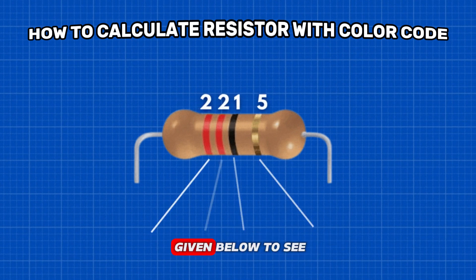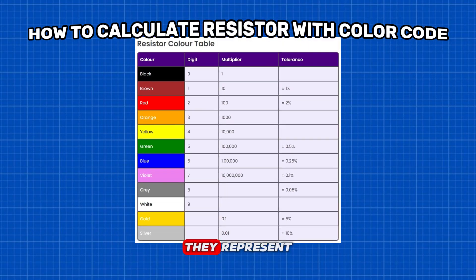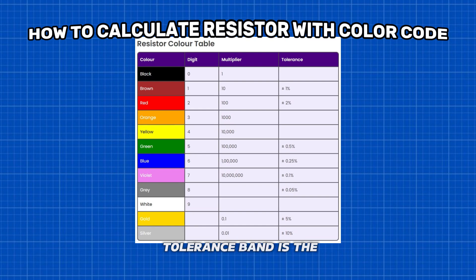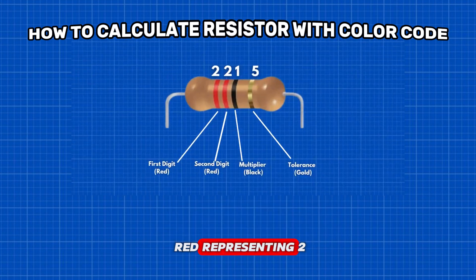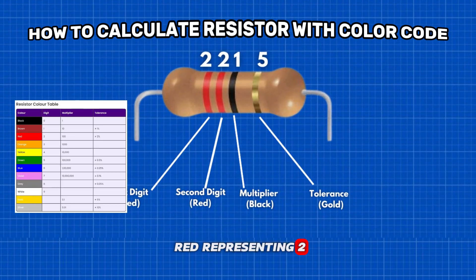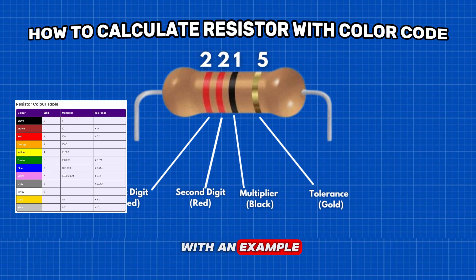Use the table given below to see which digits they represent. The band just next to the tolerance band is the multiplier band. So if the color of this band is red, representing 2, the value given is 10 squared, or 100.